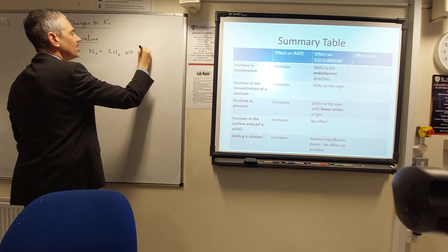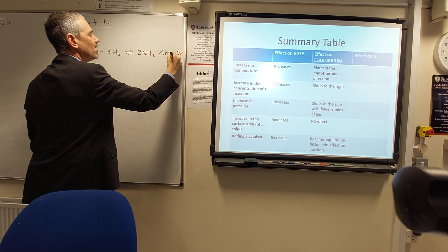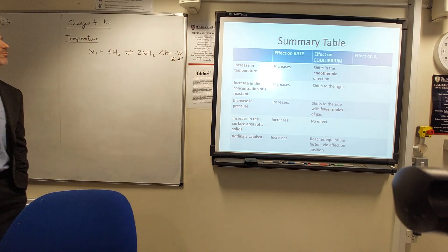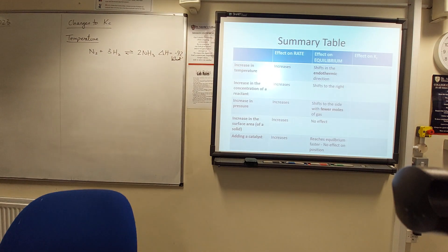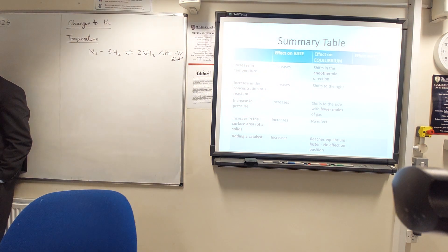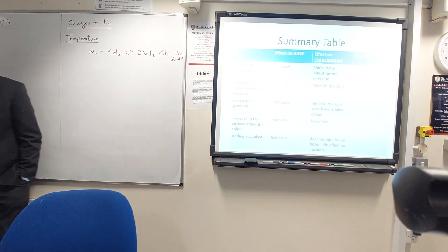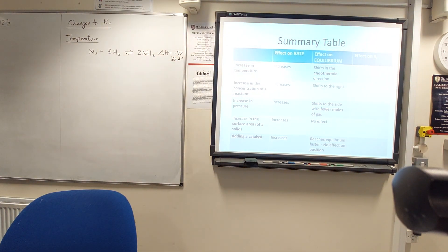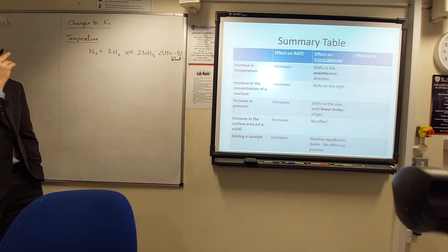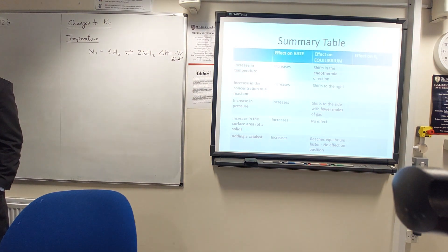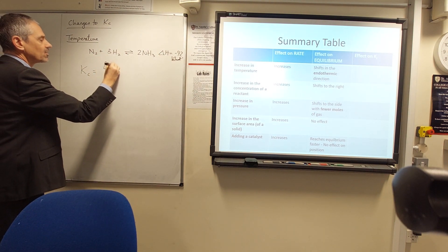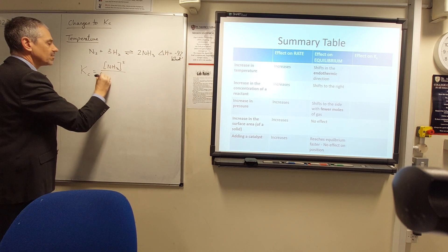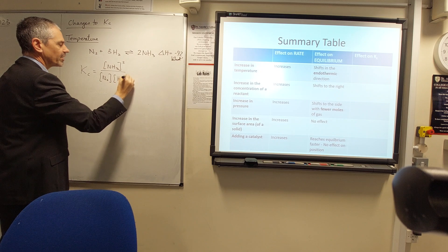Let's bring in our good old friend the Haber process. Helps to have a real example on the page. So how does an increase in temperature affect Kc? Well obviously it'll depend on the reaction because some reactions are exothermic and some are endothermic. Let me just pop Kc on the board here: concentration of ammonia squared over concentration of N2, concentration of H2 cubed.